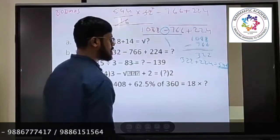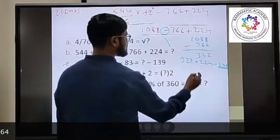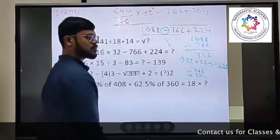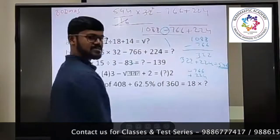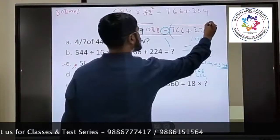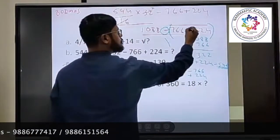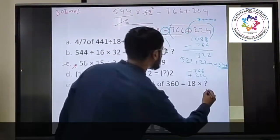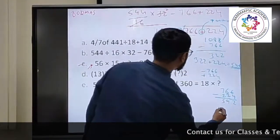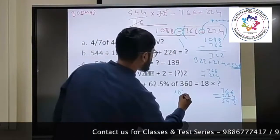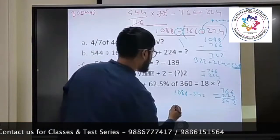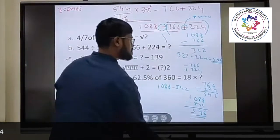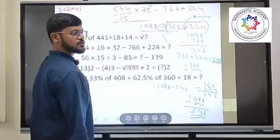Second method — the way some of you are doing it: if you consider minus 766 plus 224 inside a bracket, since it has a minus sign outside, everything inside flips. So it becomes minus, this will become minus, so 766 minus 224 gives 542. Then 1088 minus 542 gives 546. In this method also you get 546. Whichever method you use, the answer is 546.